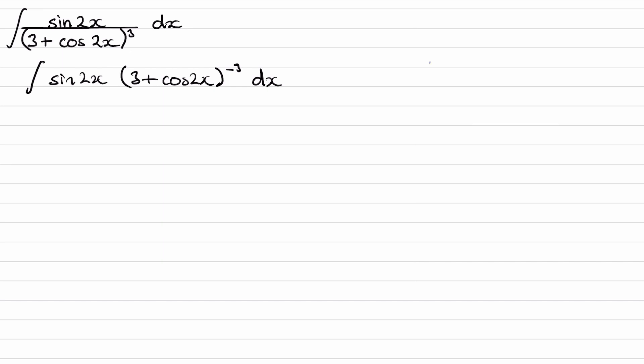This is now of the form f'(x) multiplied by f(x) to the power of n. That's the case because f(x) in this case would be what's in this bracket here — 3 plus cos 2x. If we were to differentiate that, we get minus 2 sine 2x, which is pretty much what we have here. It's off by a factor, and that factor is a constant, so we'll correct for it later.